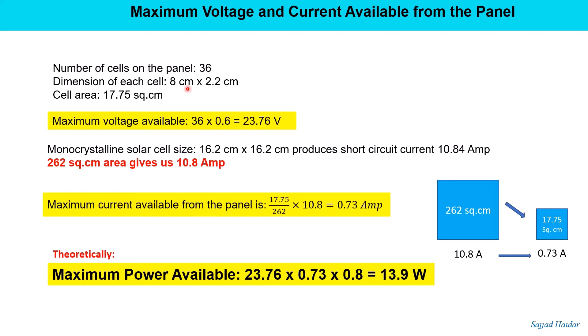So the panel which I bought from Amazon has 36 cells and each cell is 8 centimeter by 2.2 centimeter in dimension, and the cell area is 17.75 square centimeter. So maximum voltage available from this panel is 36 multiplied by 0.6, that is 23.76 volt. A monocrystalline solar cell of size 16.2 centimeter by 16.2 centimeter produces short circuit current of 10.84 amp.